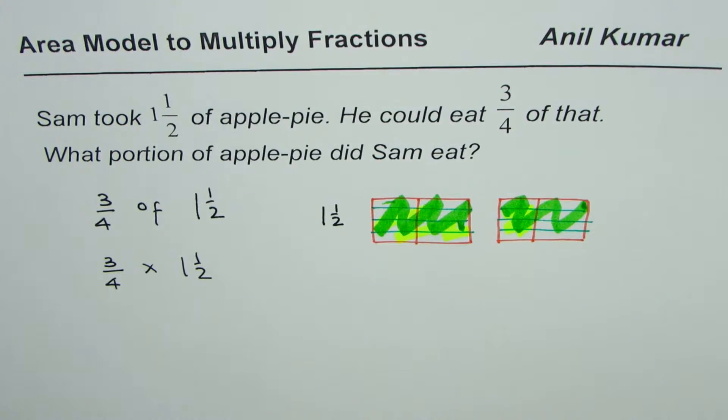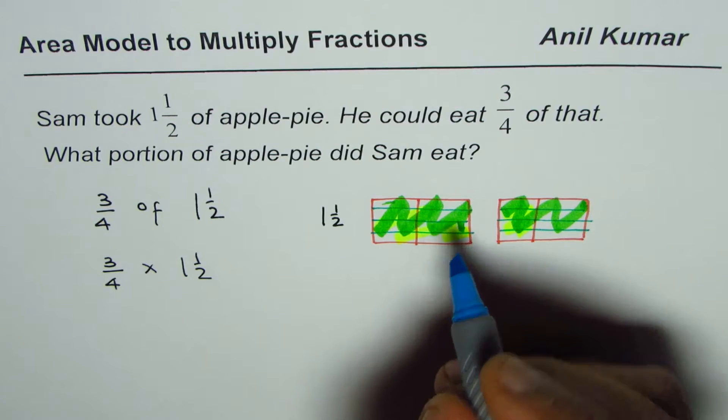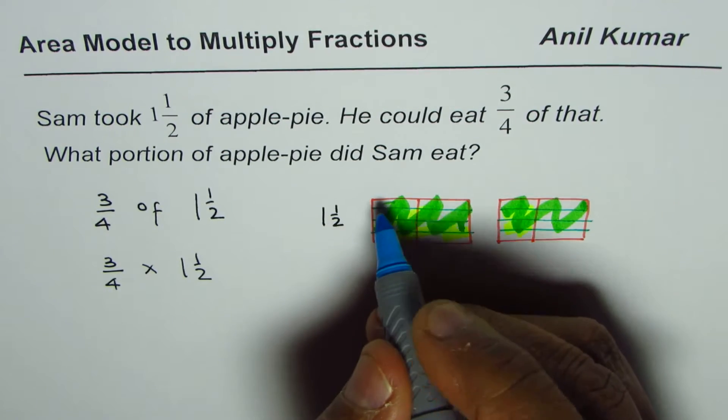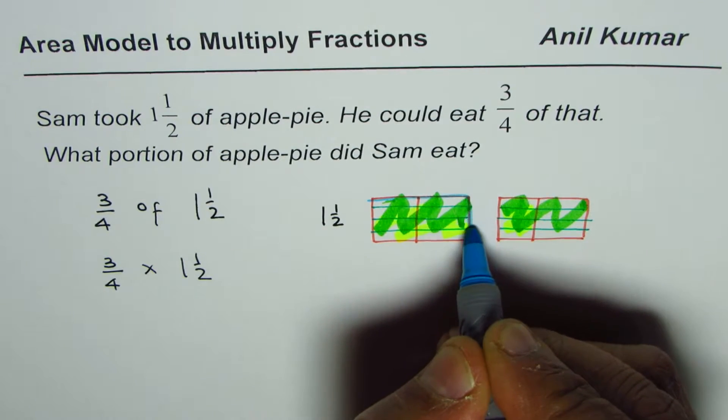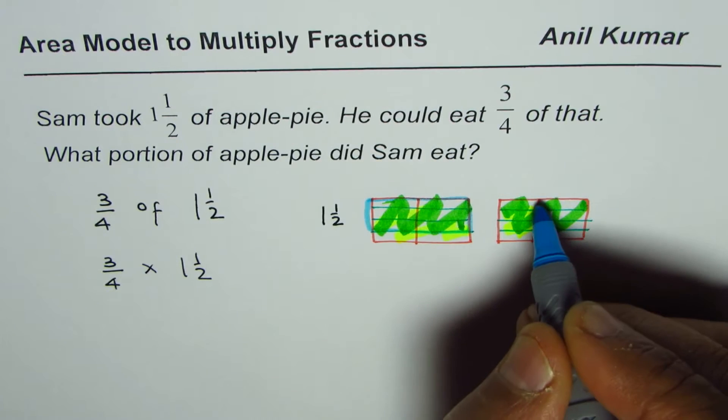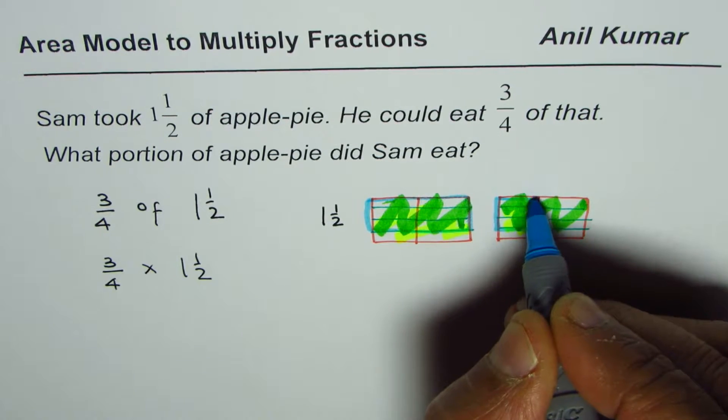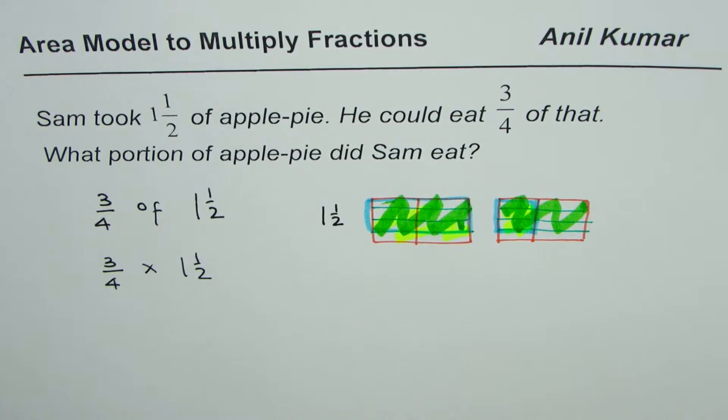Now what is common? That is the area of our interest. The common here is this portion is common, and the portion here is common to us. So that gives you three-fourths of one and a half.